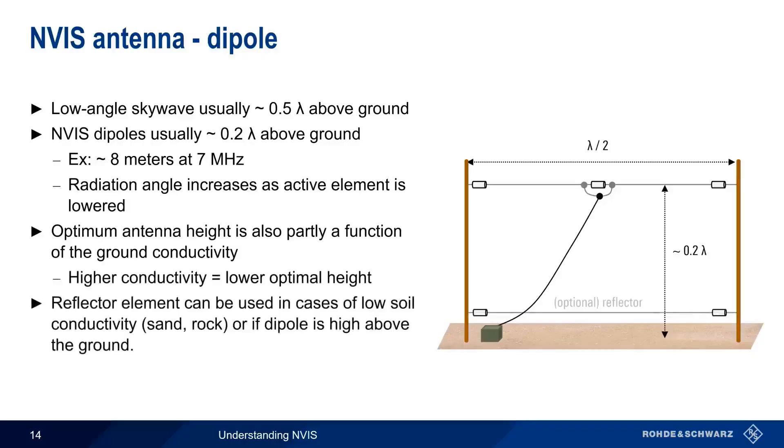Because of this, the use of an optional reflector element has sometimes been recommended, for example, when the soil has very low conductivity, such as sand or rock, or if the dipole is high above the ground. It does, however, remain unclear how much of an advantage this optional reflector provides, and in most cases, NVIS dipoles do not have a reflector installed underneath them. One final observation on dipoles. If a single dipole is used for operation over a wide frequency range, an antenna tuning unit is often needed. But a set of dipoles, or a so-called fan dipole, can also be used for NVIS applications to provide better matching over a wider frequency range.